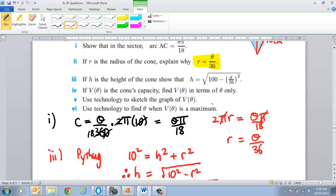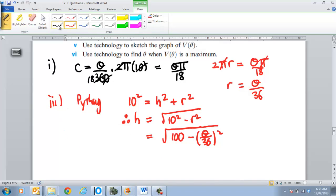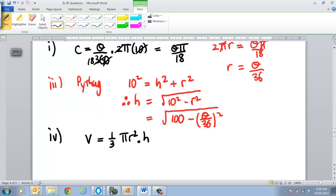Part 4, if V(θ) is the cone capacity, find that in terms of θ only. So that's what we're trying to do here. So we know the volume of a cone is equal to any pyramid shape, there's always a third area of the base. The area of this base is, in fact, πR squared times by the perpendicular height H. Now, what we do know, is we've got H in terms of θ, we've got R in terms of θ, so therefore, we can say that's equal to a third, and then we've got θ on 36 squared, and we know H is equal to the square root of 100, take θ on 36, all squared. So that's my volume in terms of θ only.